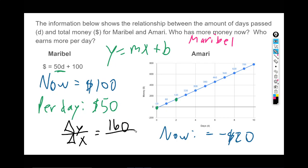I have to go up 160 to get from negative 20 to 140. The change in x from 0 to 2—we just changed 2. So the slope is 160 over 2, which is 80. Which means Amari is earning $80 every day. Per day for Amari is $80 compared to Maribel's only earning $50. So the answer to the second question here is Amari.